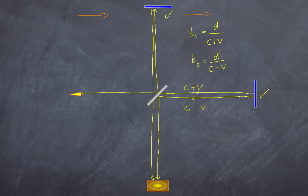When you combine these two values here, you end up getting a total time of equaling D over C plus V plus D over C minus V. And if you calculate that out, and I'll let you do the mathematics, it's 2DC over C squared minus V squared.